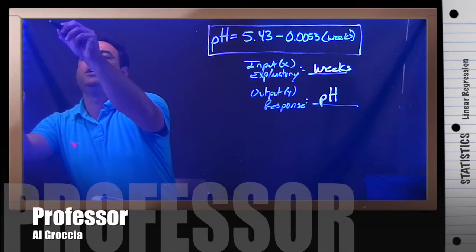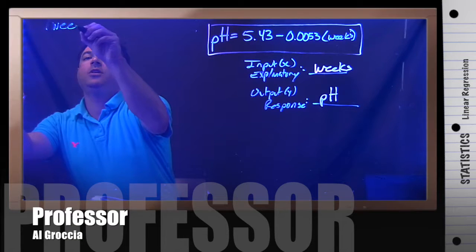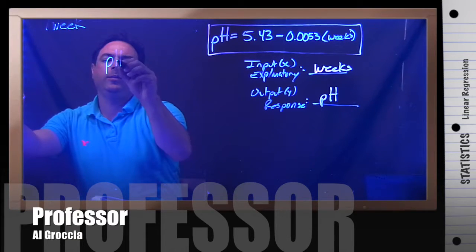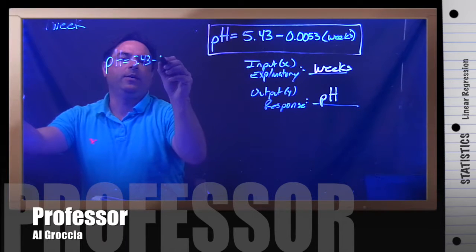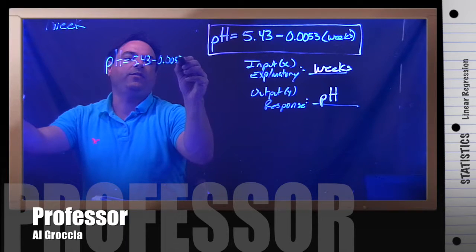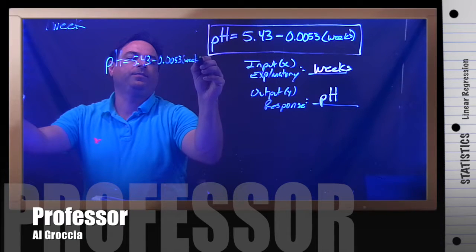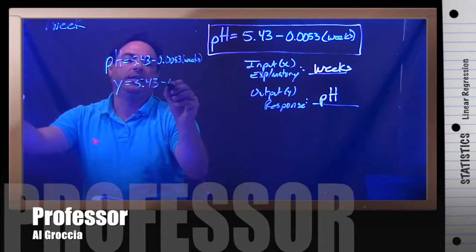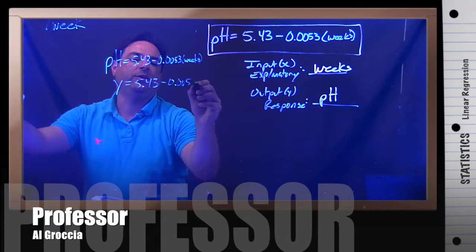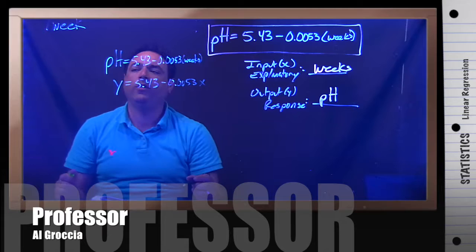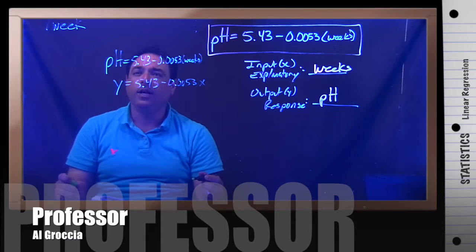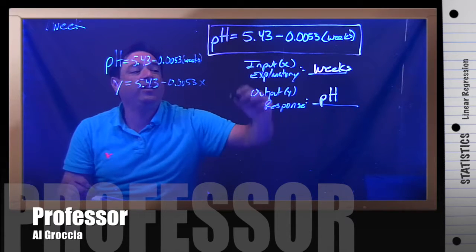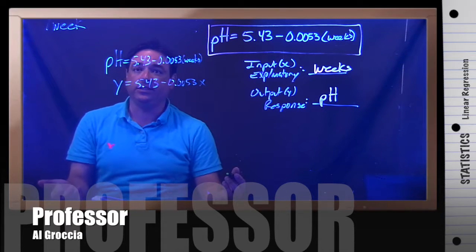The first question we're asked is, what will the pH be after one week? So we're given the equation pH equals 5.43 minus 0.0053 times weeks, which can also be written as y equals 5.43 minus 0.0053x. So if we're trying to predict what happens at one week, the question is, does the week go in for x or does the week go in for y? And that's why this is very important that we're clear which is x and which is y.